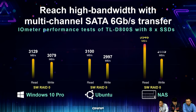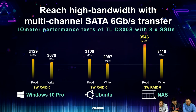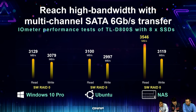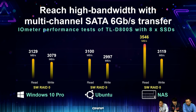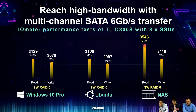Here is the amazing performance for the SATA J-Bot. Benchmarks from Windows 10, Ubuntu, and on NAS show the TL D800S achieves three times higher performance than the TL USB J-Bot. If you're working with a 4K media editing team or 3D content creation, the TL SATA J-Bot is a great companion for your computer.